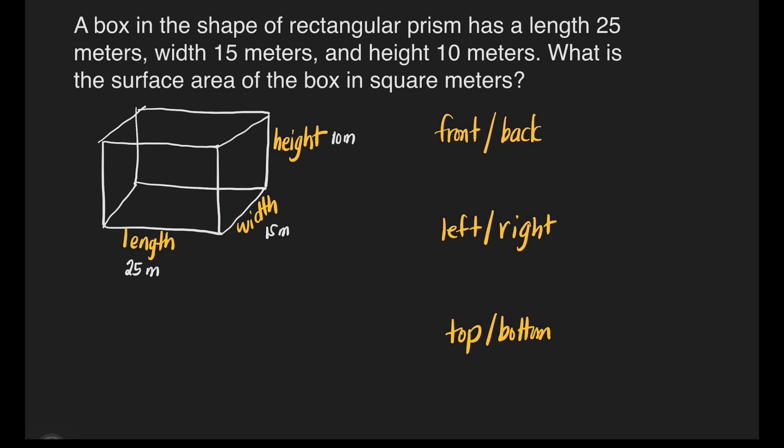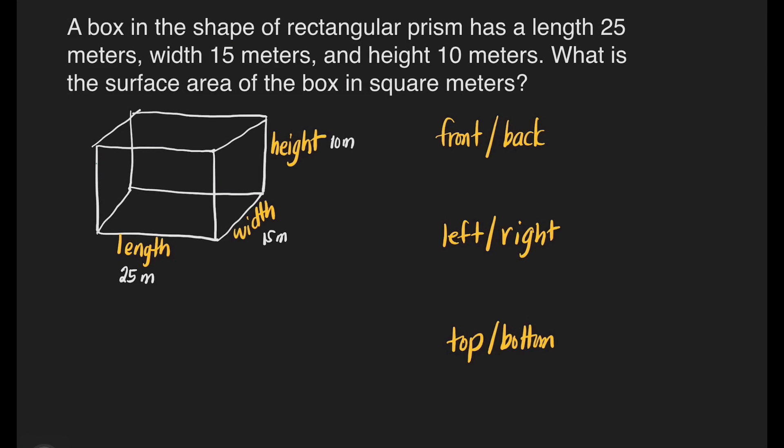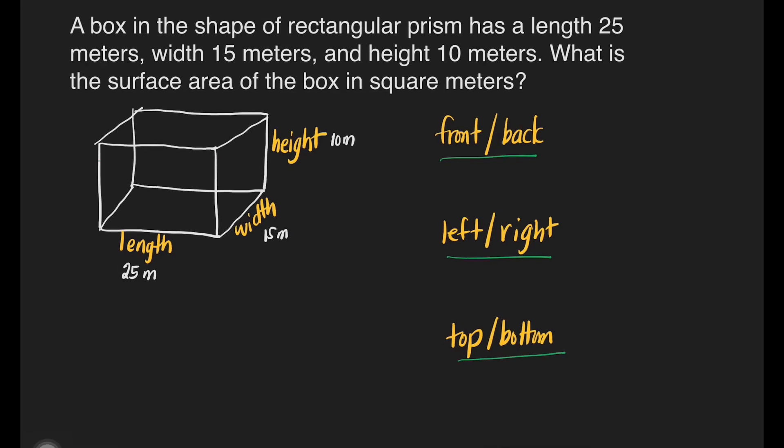We have the front, back, left, right, top, and bottom. Take note that front and back faces have the same area; left and right also have the same area; and top and bottom also have the same area. What is the shape of these faces? It is in the shape of a rectangle. To find the area of a rectangle, we only need to multiply its length and its width.